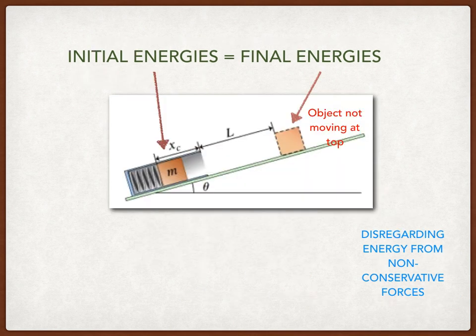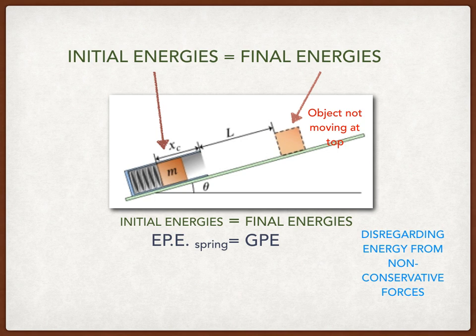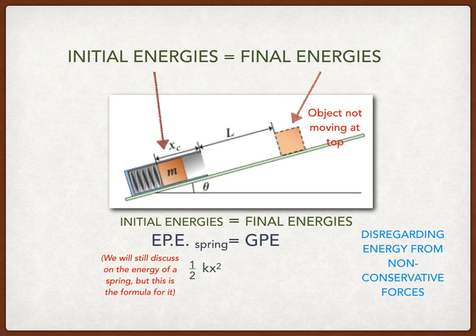For this part, initial energy equals final energy. The initial energy is the elastic potential energy coming from the spring. The formula for elastic potential energy is ½kx². Since the object is at rest at the top, we have mgh for the final energy. So the final formula is: ½kx² equals mgh.